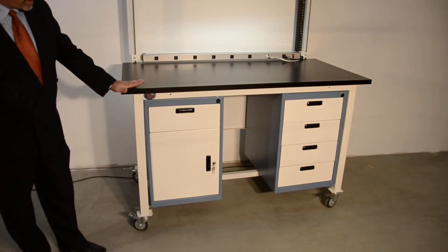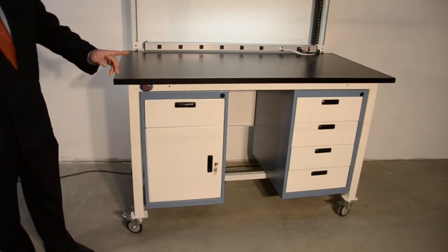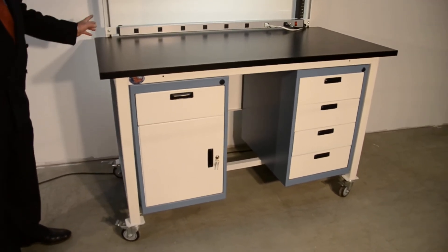Base workbench comes with a work surface, left leg, right leg, front rail, back rail.